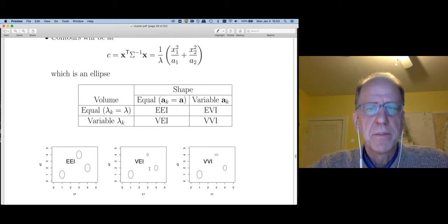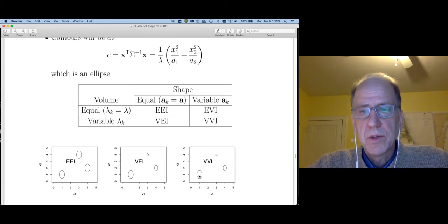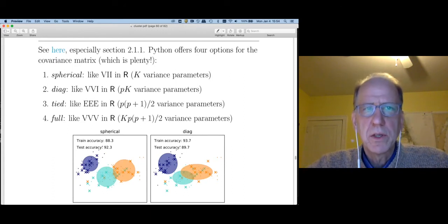We could also have clusters that are elongated in the x1 direction, as long as all four clusters look exactly the same. VEI, on the other hand, allows for the four clusters to have different scaling parameters, but they all have to have the same orientation. VVI, on the other hand, allows all the clusters to have different orientations and scalings. However, all the off-diagonal elements have to be zero. So VVI is the equivalent of diag in Python.